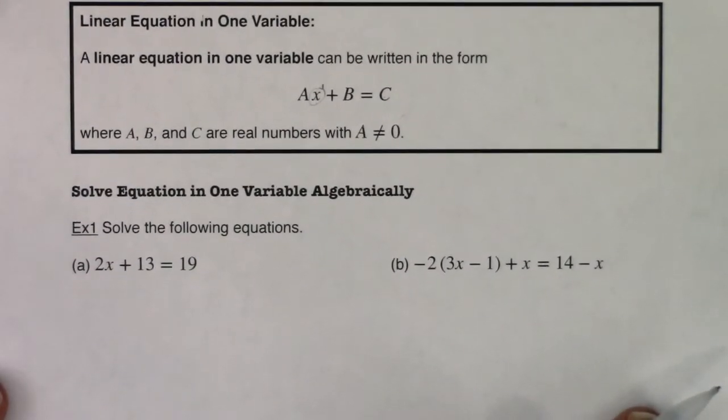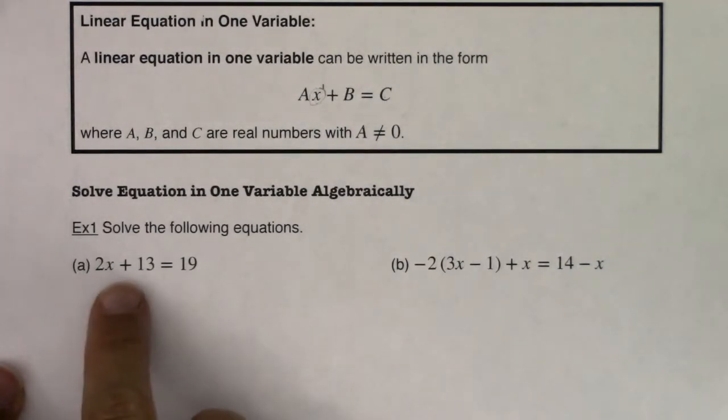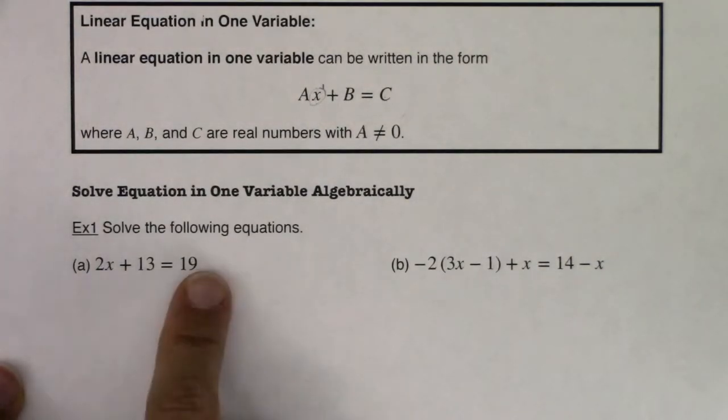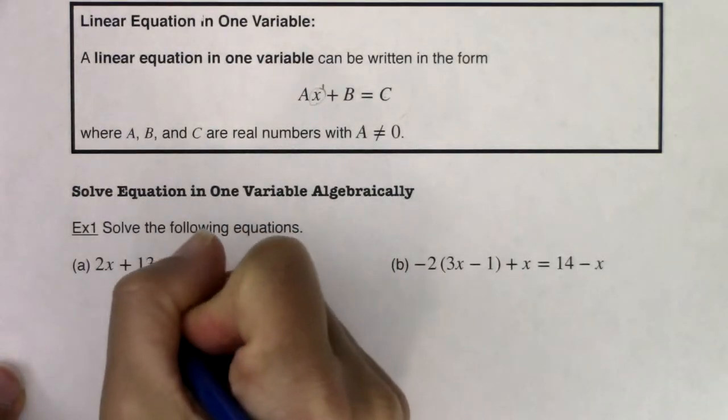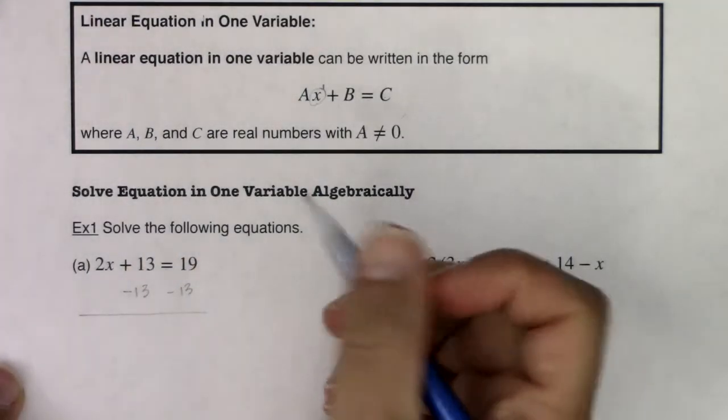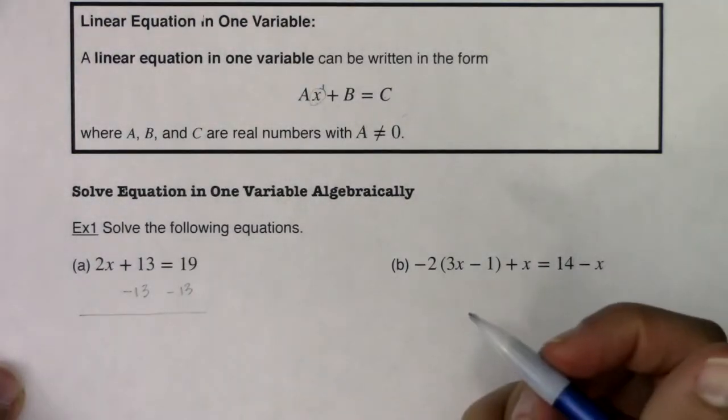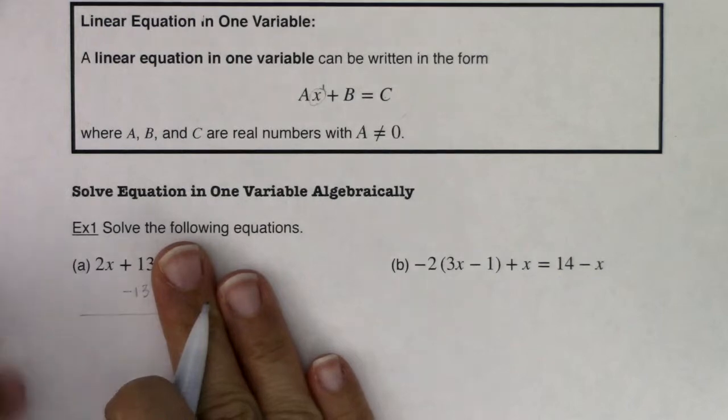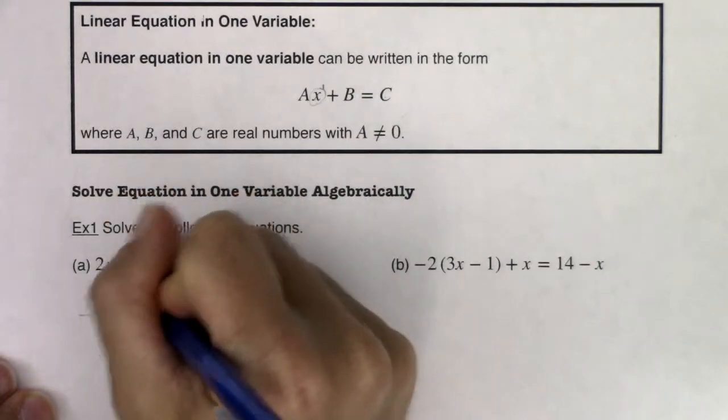In example one, it says solve the following equations. We have 2x + 13 = 19. If we look at the expression on the left side, it's simplified. Nothing I can do there. On the right side, it's simplified. So I'm going to subtract 13 from both sides. We're going to use the subtraction property of equality, which says if you have two equations that are equal and you subtract the same number from each side, then we'll still have equality. On the left side, I have 2x + 13 - 13. The 13s are like terms, opposite signs, so they're going to cancel.